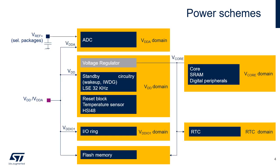STM32C0 main power supply is VDD/VDD-A, supplying all IOs, the reset block, temperature sensor, and all internal clock sources. In addition, it supplies the standby circuitry which includes the wake-up logic and independent watchdog. VDD supplies voltage regulators which provide the VCore supply. VCore supplies most of the digital peripherals, SRAM, and flash controller.